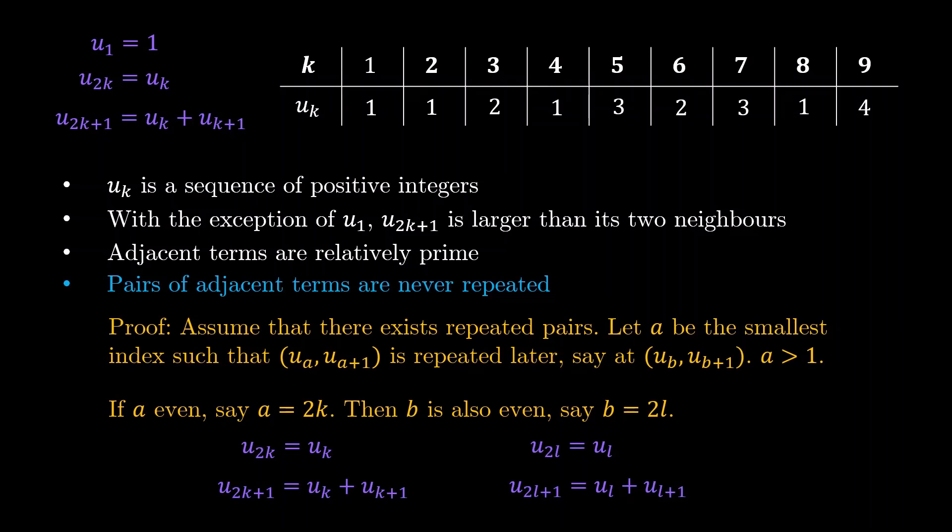So now we can apply the formula to describe u2k and u2k+1 in terms of its smaller components. Same thing for u2l and u2l+1. And if we invert the formula around, we can write uk and uk+1 in terms of its larger terms. We see that, therefore, uk, uk+1 is repeated again at a different position.